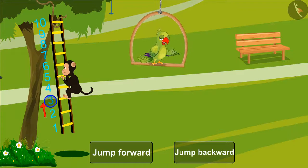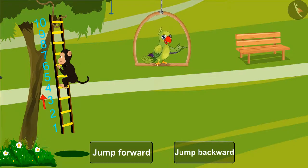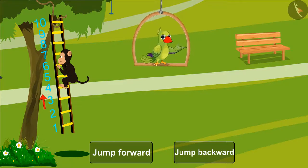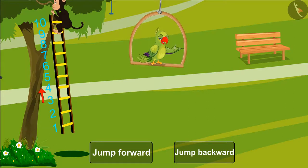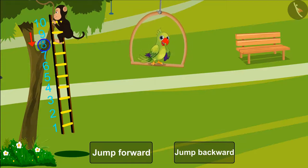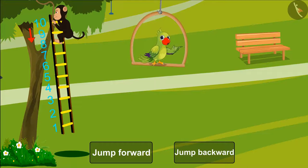So kids, did you see how the monkey is jumping forward and backward? At first he was on the third step from which he jumped a step forward, so he reached the fourth step, right? Then he went to the ninth step and jumped a step backward, so he reached the eighth step.